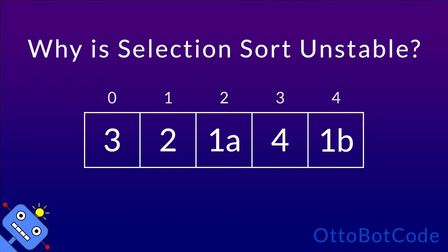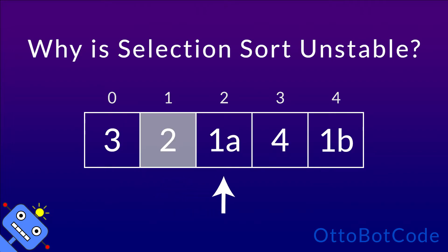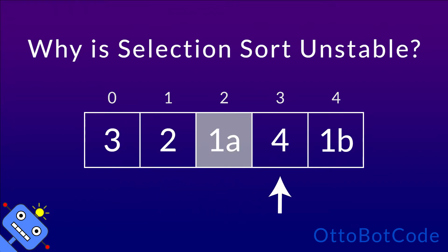Which element will selection sort pick as the minimum in this case? Remember that it performs a left-to-right scan while keeping track of the current minimum. When a new element is encountered, it only beats the current minimum if it's smaller, not if it's equal. And that's exactly what we want — in the first step, 1a will be picked and swapped with 3.